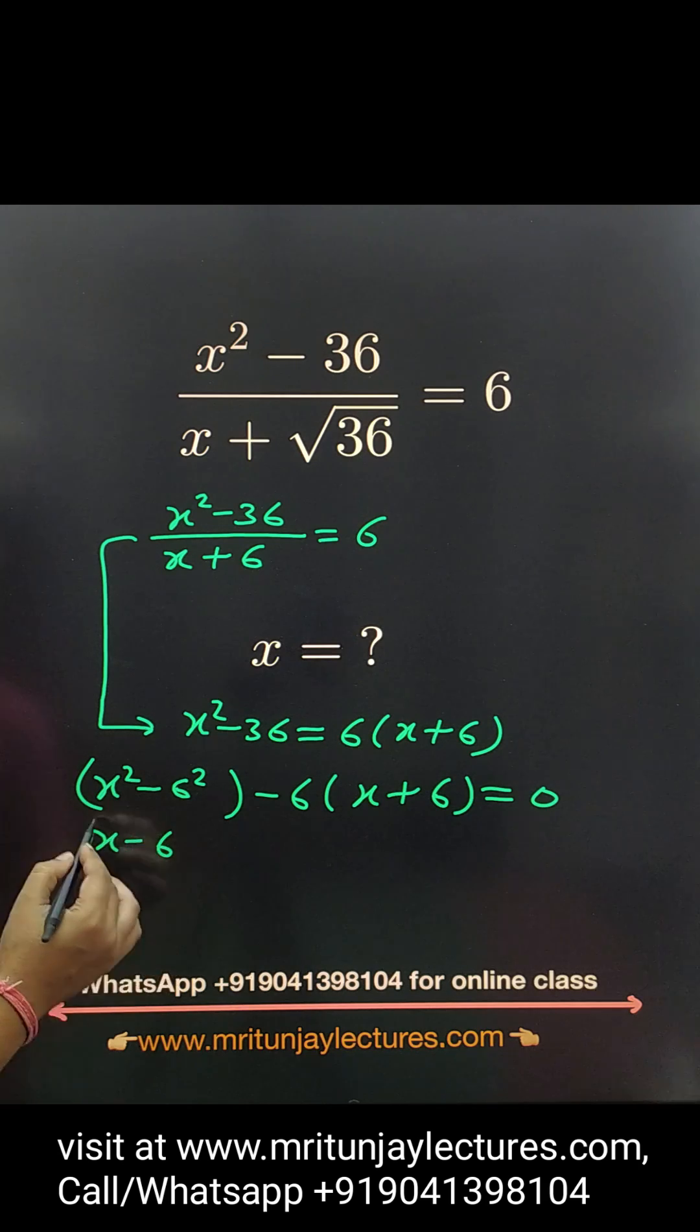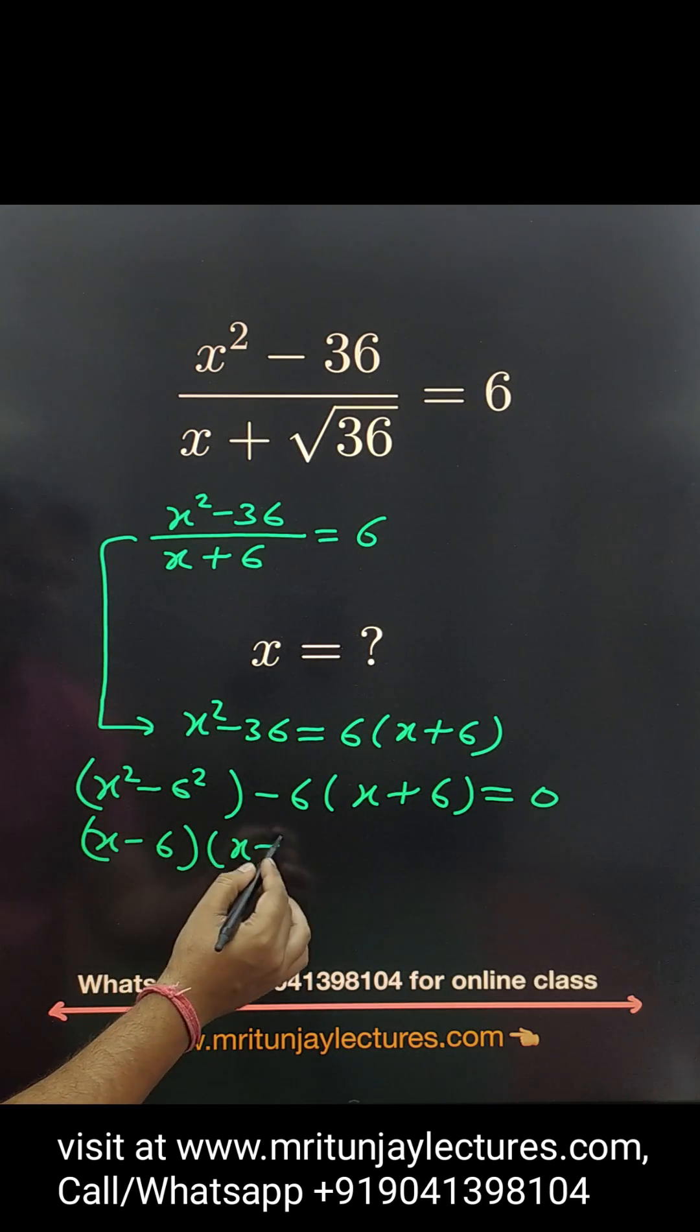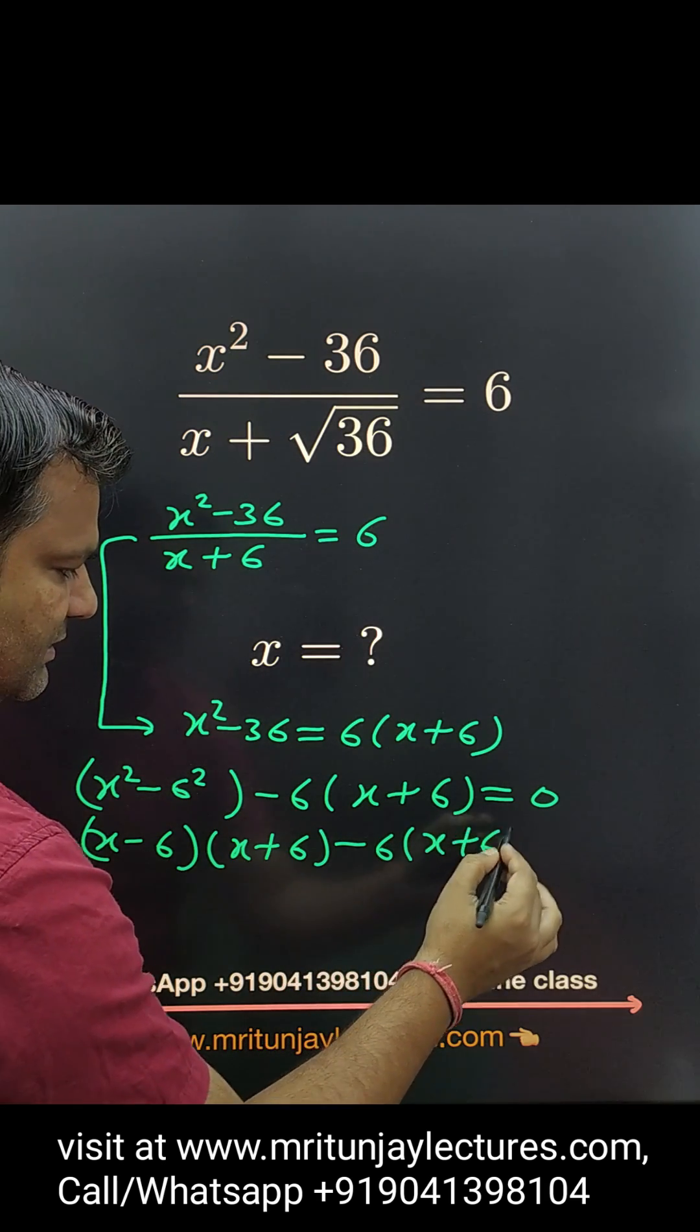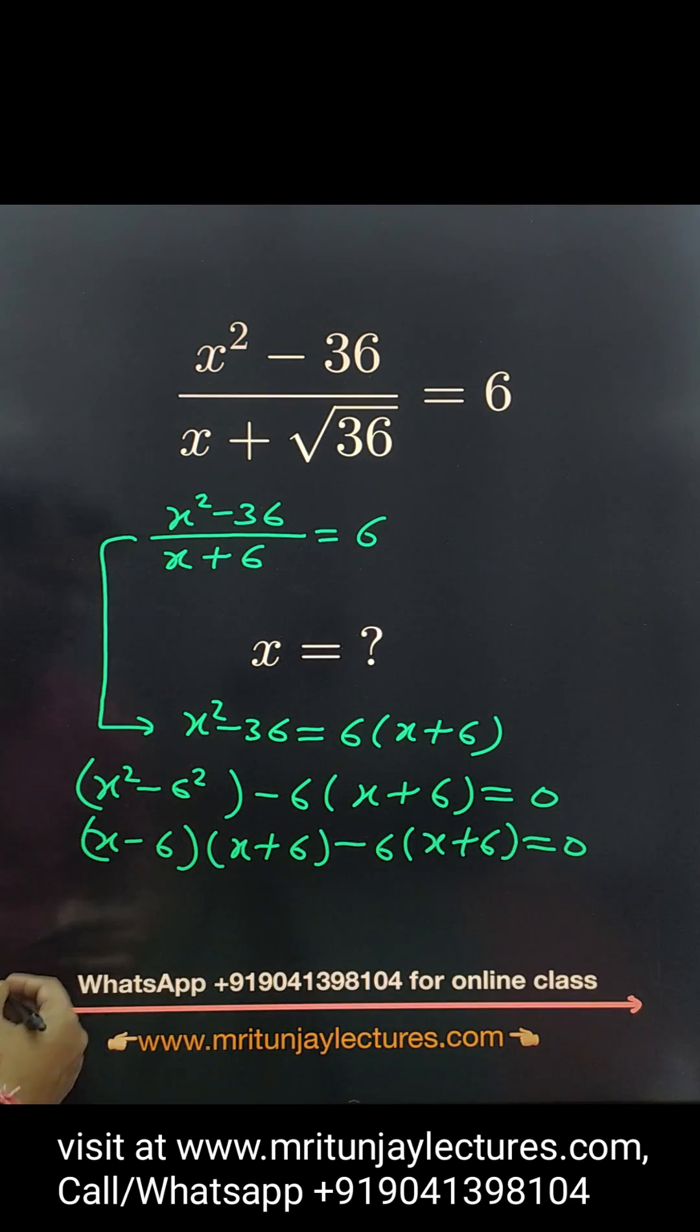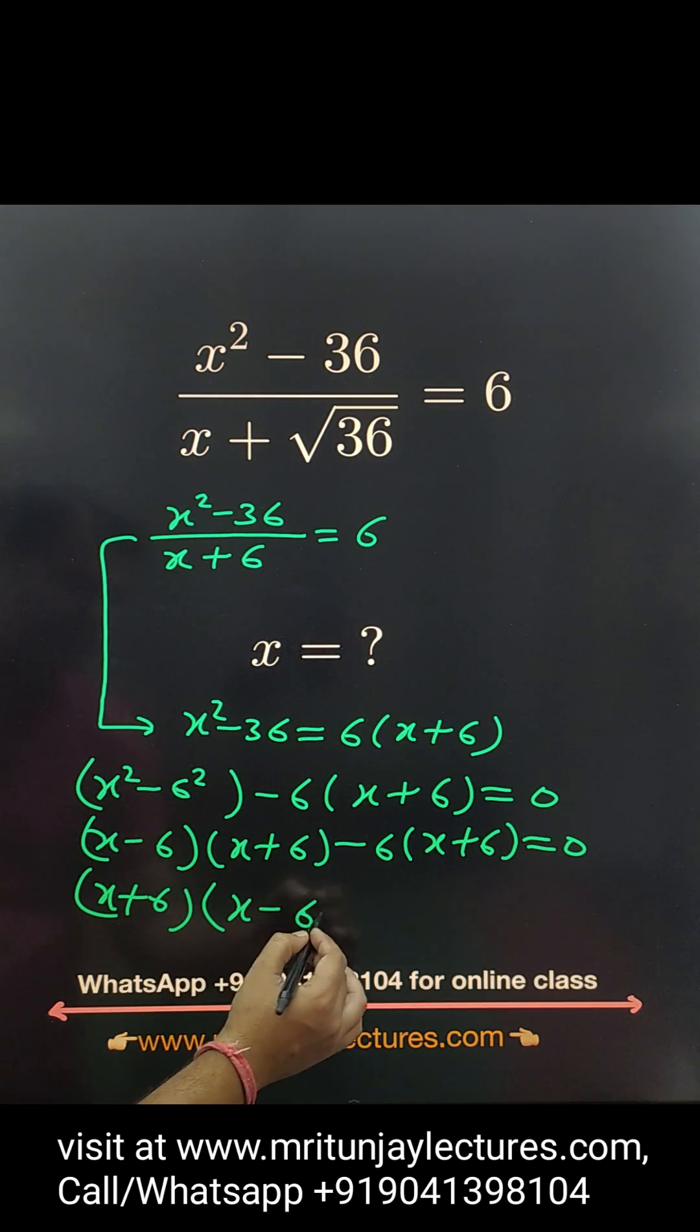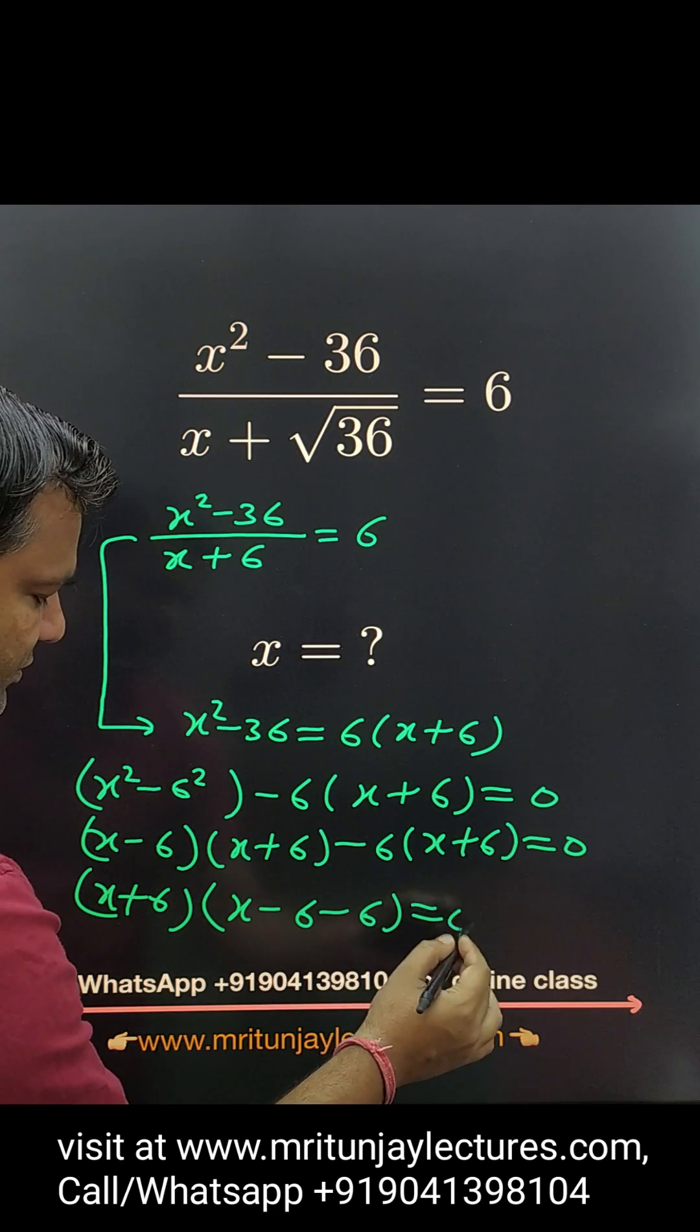So basically here, (x - 6)(x + 6) - 6(x + 6) = 0. If we take (x + 6) common, then x - 6 - 6 equals 0.